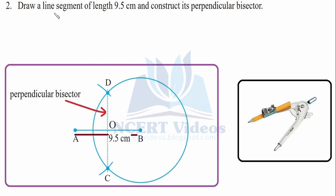Question 2: Draw a line segment of length 9.5 cm, represented by dots since it is a line segment. Construct its perpendicular bisector by putting the needle on B and opening the compass to a radius greater than half of AB to construct a circle. With the same radius, put the needle on A and cut the circle at D and C. Connect both points with a dotted line to make the perpendicular bisector.